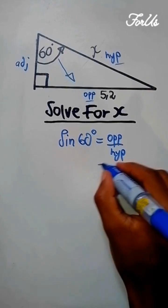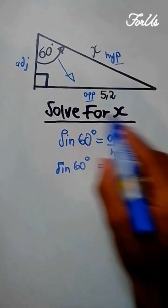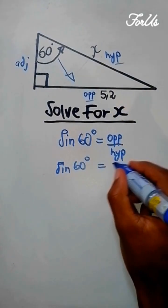Then I'm going to substitute, it's going to be sine of 60 degrees. Here the opposite is 5.2.